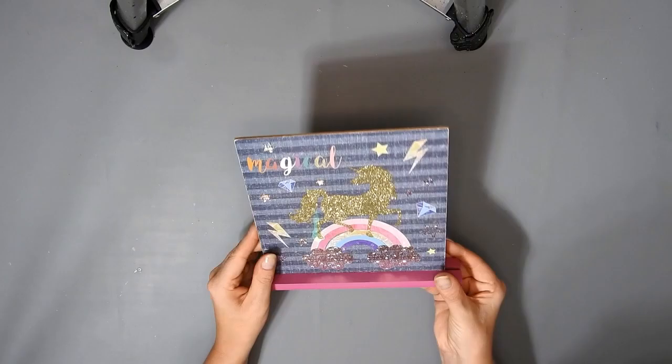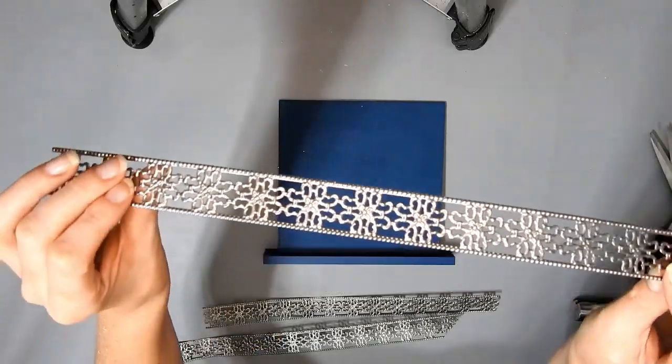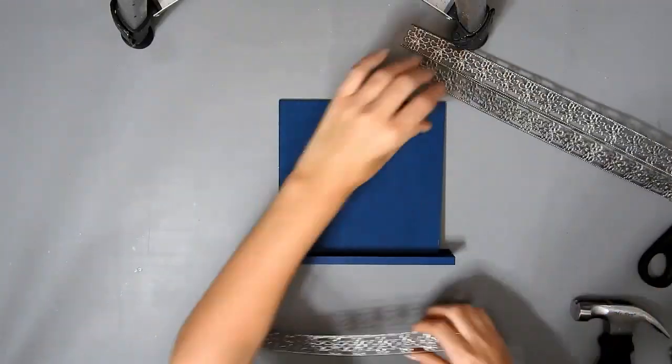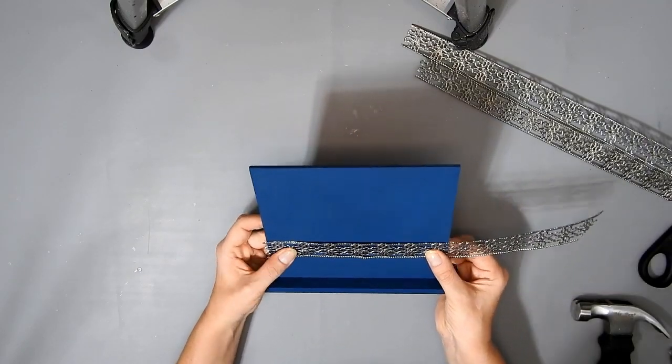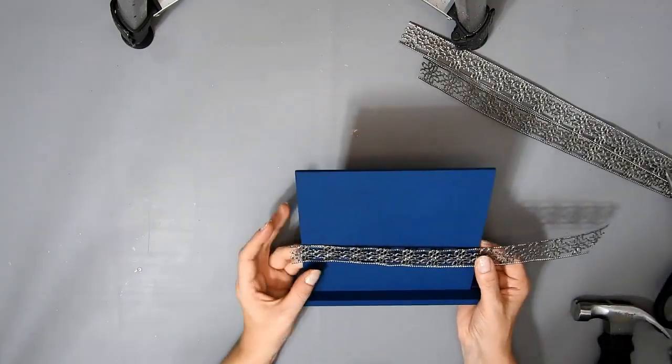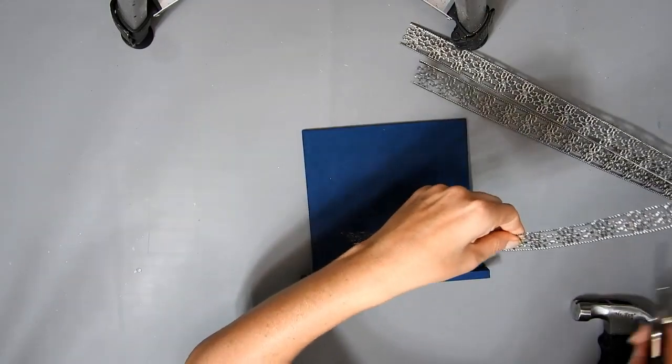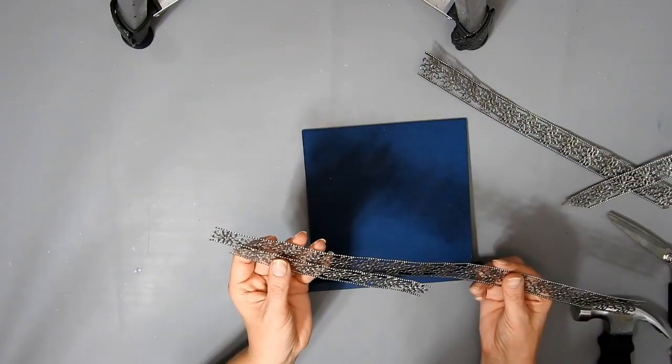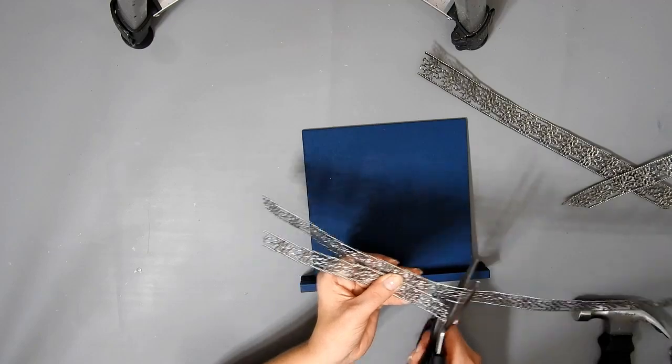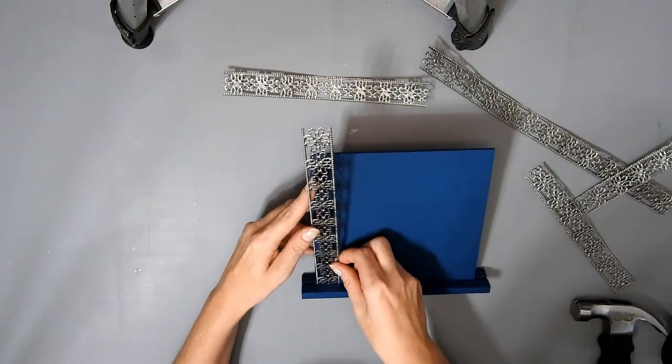I have this unicorn sign I had for ages and then I painted it with the Mountain Blue Apple Barrel paint. I'm going to use some metal ribbon and I'm just going to measure how much I would need. I need four pieces so I'm just checking I want the pattern to be even on both sides.